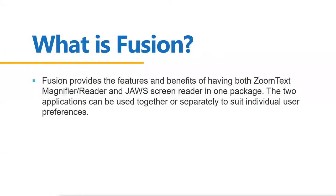What is Fusion? Fusion is JAWS and ZoomText running together. It provides the features and benefits of having both ZoomText and JAWS in one package. The two applications can be used together or separately to suit individual user preferences. When you install Fusion, it puts three icons on the desktop: one Fusion icon, one ZoomText icon, and one JAWS icon. The user has the option to run just JAWS by itself, just ZoomText by itself, or launch Fusion to run both magnification and the full JAWS screen reader.